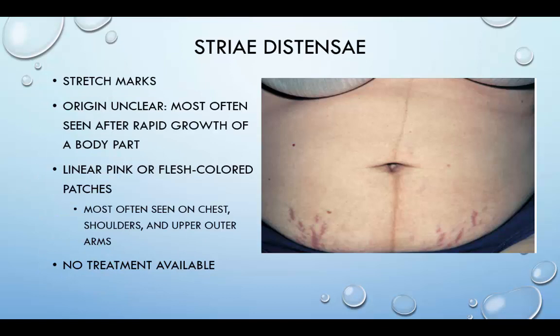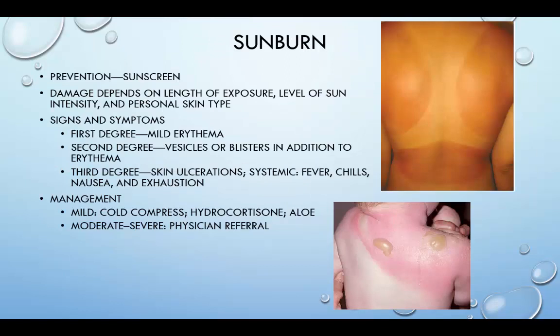Striae distensae, or stretch marks, occur most often after rapid growth of a body part, such as after pregnancy. Linear pink or flesh-colored patches occur on the skin, most often seen on the chest, shoulders, and upper outer arms. Unfortunately, no treatment is currently available. To prevent sunburn, we want to apply sunscreen. The effectiveness of sunscreen is based on the sun protective factor (SPF). For example, an SPF of 15 indicates that an individual can be exposed to ultraviolet light 15 times longer than without sunscreen before the skin will begin to burn. The higher numbers of SPF provide better sun protection. The full extent of the injury may not be assessed until 24 to 48 hours after exposure. Although sunburns are easily treated, it is best to prevent them from occurring.